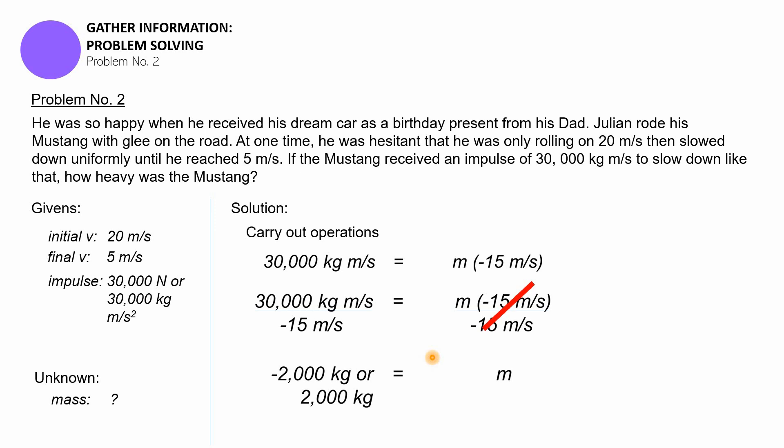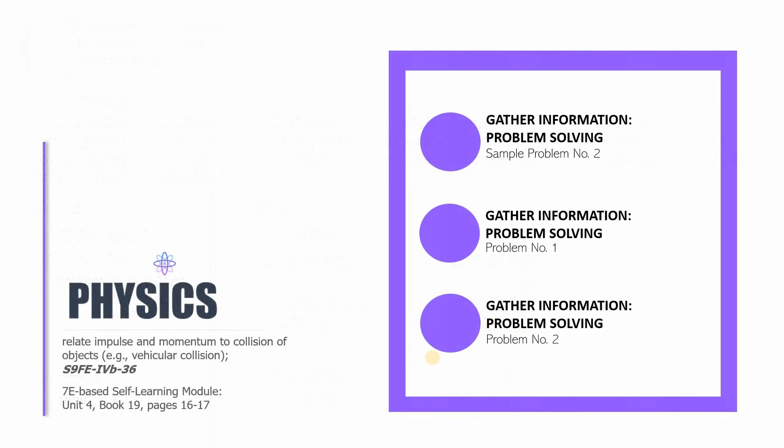Do you have the same answer? I hope that you do. This has been Sir CJ, and so far what we finished in this episode was the following: we did one more sample problem - Sample Problem Number 2 for problem solving under Gather Information, and then under Problem Solving Gather Information we performed two independent problem-solving activities.